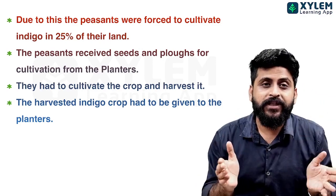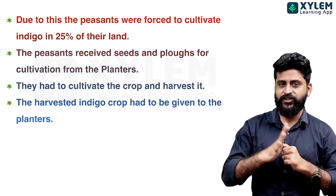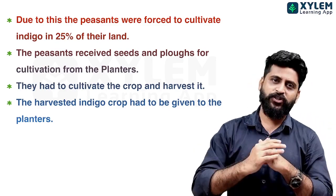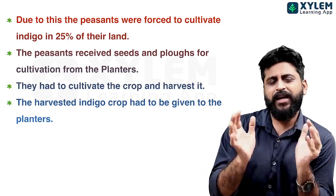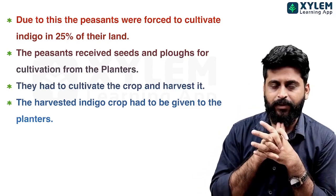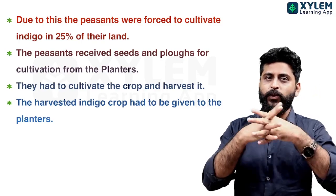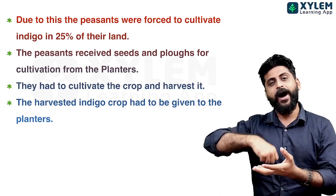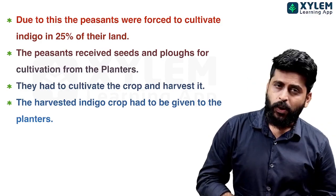The peasants had to cultivate the crop and harvest it. Then the harvested Indigo crop had to be delivered to the planter. This was the duty of the peasants.